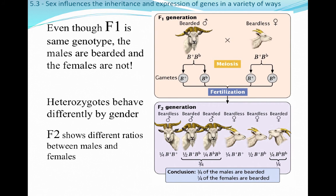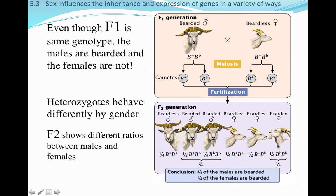As we move into the F2 generation, if we let the F1 generation interbreed with each other like we've been doing in the plant examples, the F2 generation gets complex really quickly, as you can see in the lower portion of this schematic. The heterozygotes are going to behave very differently depending on gender. Three quarters of the males are going to be bearded and a quarter are going to be beardless, while only a quarter of the females are going to be bearded.